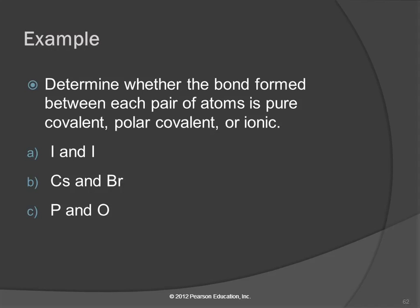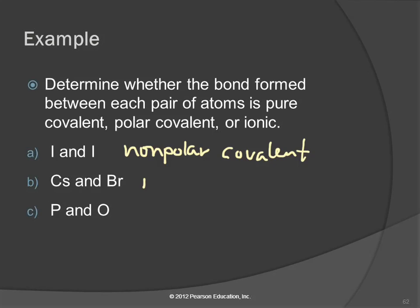Here's an example: determine whether the bond between each pair of atoms is pure covalent, polar covalent, or ionic. Iodine and iodine — same element, so nonpolar covalent. Cesium and bromine — cesium is a metal, so ionic. Phosphorus and oxygen — both nonmetals but different elements, so polar covalent.